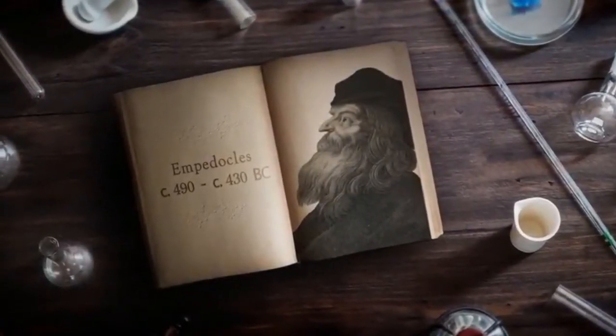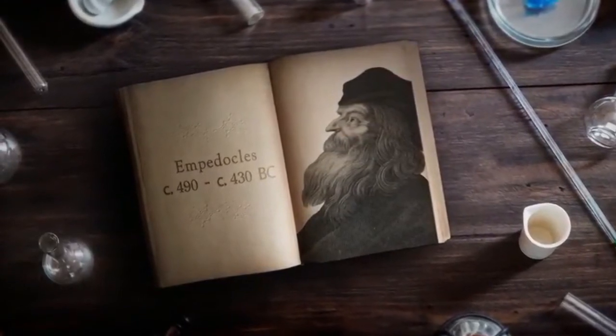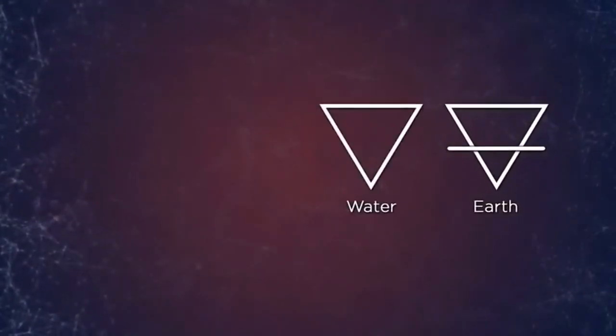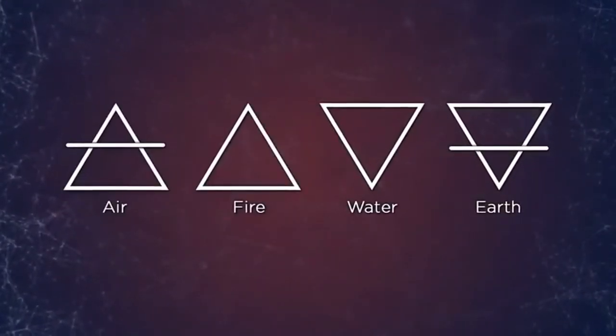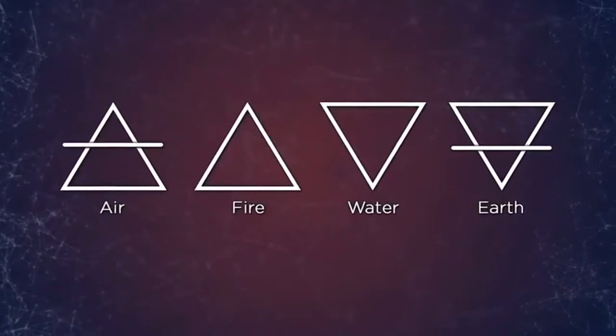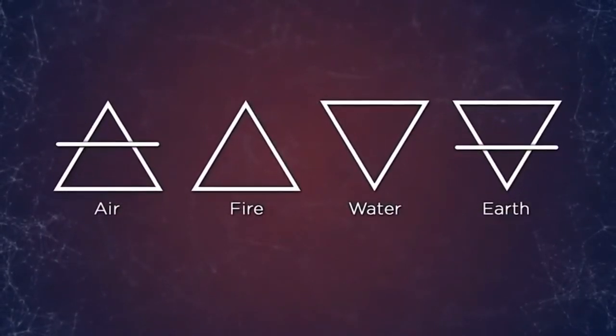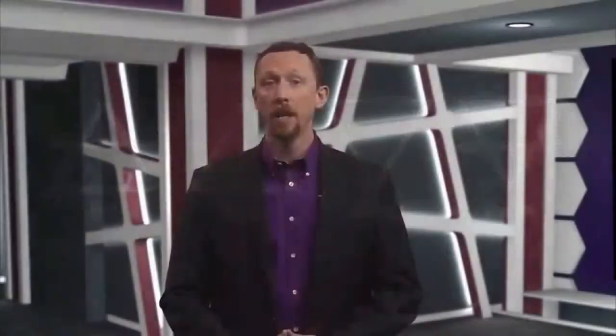Empedocles is famous for first postulating that there were not one, but four fundamental substances: earth, water, fire, and air. Now he called these fundamental substances elements and theorized that they combine in various ratios to make up all the other materials in the universe. He seemed to be on to something here. Having a library of just a few fundamental substances meant that they might be combined in various ratios, thus creating a continuum of compositions offering a buffet of materials that was virtually infinite.